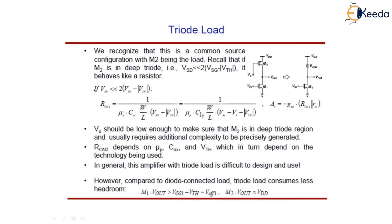So this VB should be low enough to make sure that M2 is in deep triode region, but it requires additional complexity to be precisely generated.